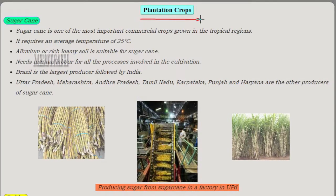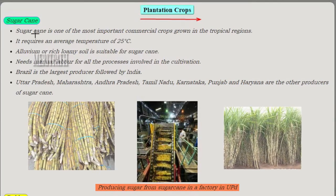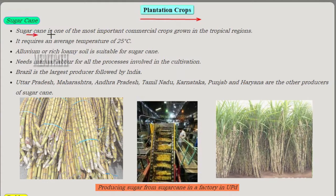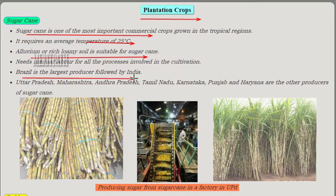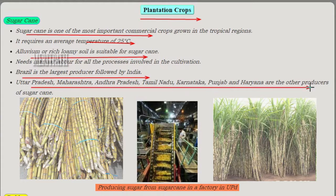The second type is plantation crops. Sugarcane comes under plantation crops. Sugarcane is one of the most important commercial crops grown in tropical regions. It requires a temperature of 25 degrees centigrade. Alluvial or rich loamy soil is suitable for growing sugarcane. Brazil is the largest producer, followed by India. In India, Uttar Pradesh, Maharashtra, Andhra Pradesh, Tamil Nadu, Karnataka, Punjab, and Haryana are the producers of sugarcane.